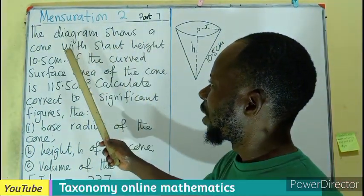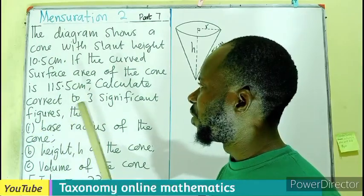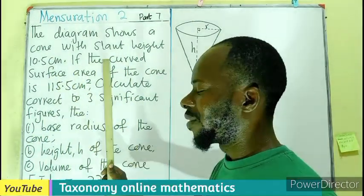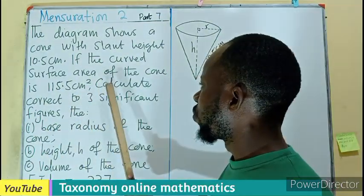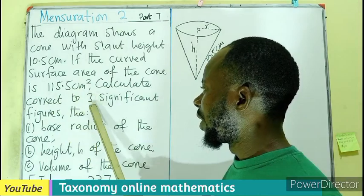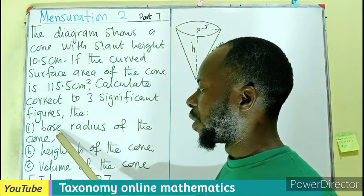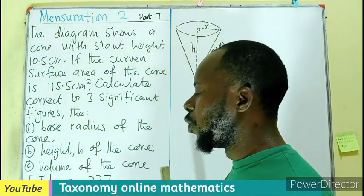The diagram shows a cone with a slant height of 10.5 cm. If the curved surface area of the cone is 115.5 cm squared, we have to calculate correct to three significant figures the base radius of the cone, the height of the cone, and the volume of the cone.